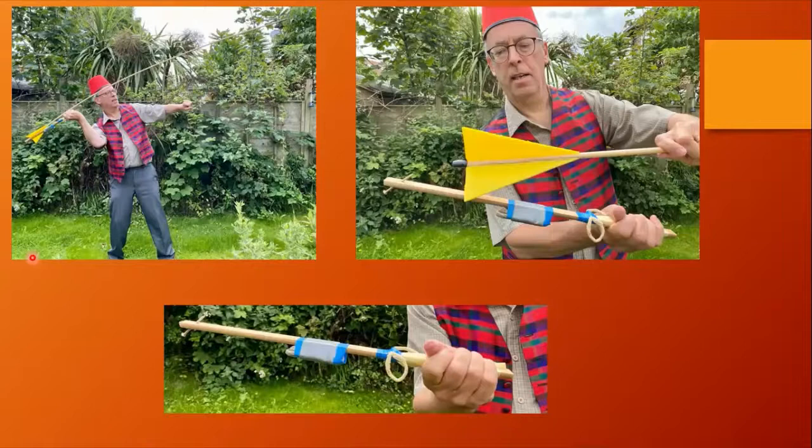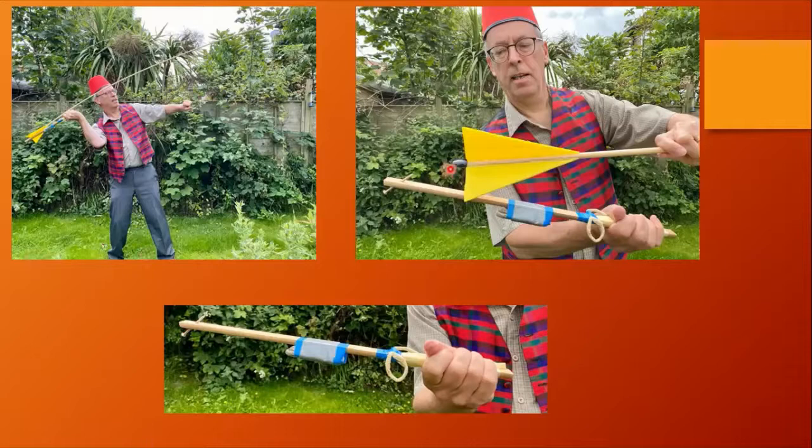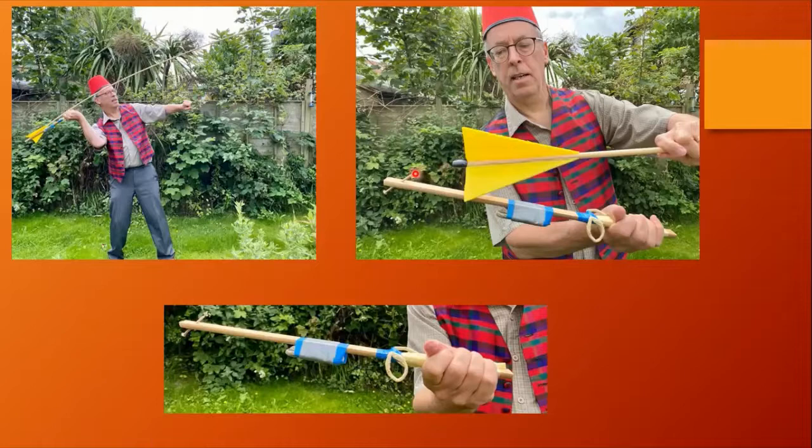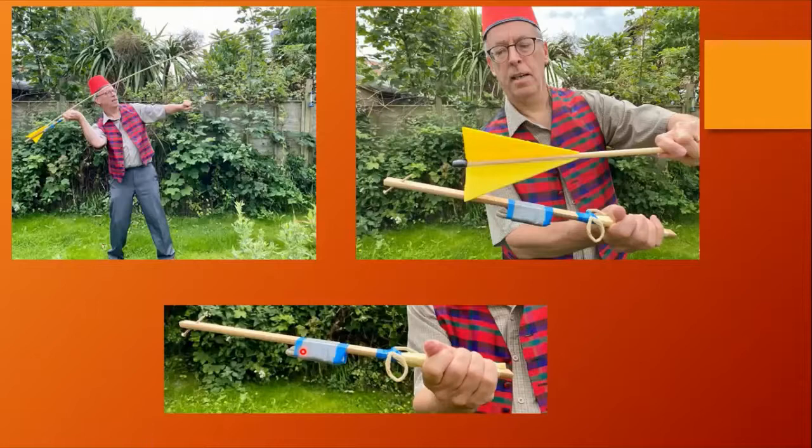Now here you see my atlatl. The end of the dart here is hollowed out so that the end of the screw fits onto it, but different designs are possible. Interestingly we might ask ourselves why is the stone taped to the thrower? Well it acts as a counterbalance to the weight of the dart and makes it easier to hold.